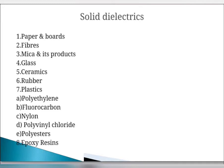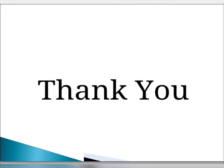Epoxy resin is a thermosetting insulating material possessing excellent dielectric and mechanical properties. It can be easily cast into the desired shape even at room temperature, and its basic properties can be modified by the selection of curing agents or by the use of modifiers and fillers. These are the different types of insulating materials used in various electrical apparatus and equipment.